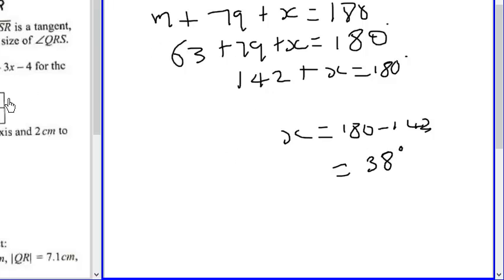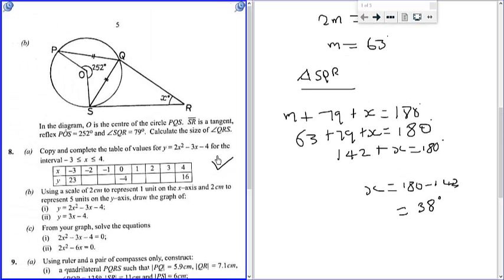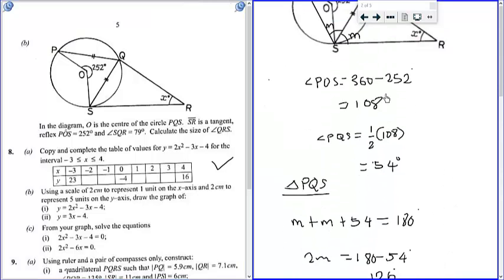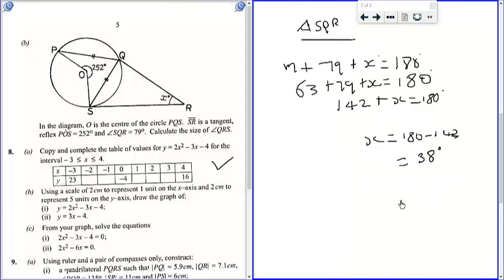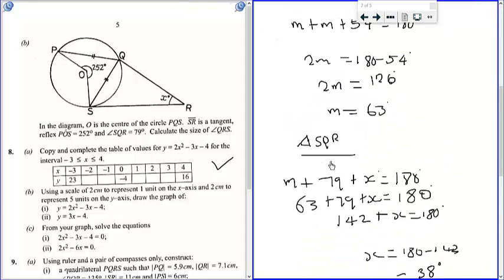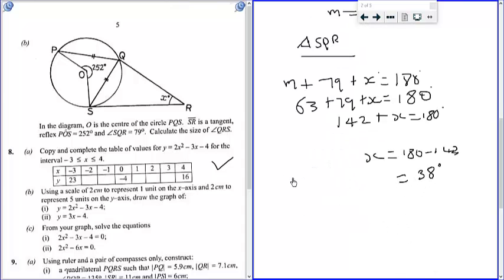So in the next video we will be looking at another approach. Another approach that you can use is by using the whole quadrilateral PQRS. If you add all this M plus M plus M plus 79 plus 54 plus X, you should get 360. So this is one of the approaches you can use to get the value of X to be equal to 38 degrees. So see you in the next video.